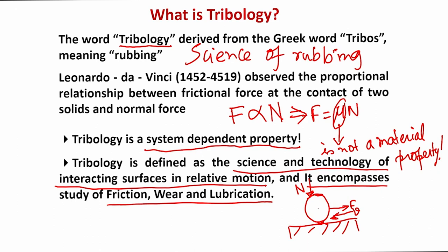Essentially, one solid is stationary and another solid is in relative motion. There is relative motion between two solids — one is a sphere and one is a flat body. If there is absolutely no relative motion, then there is no friction and no wear.